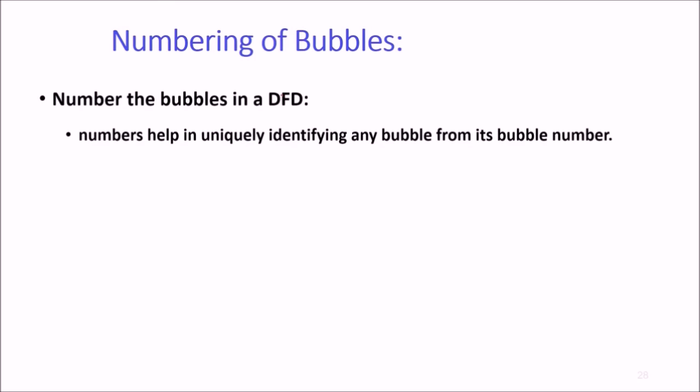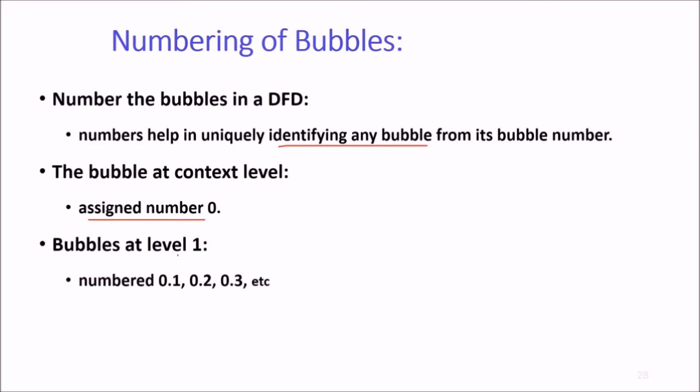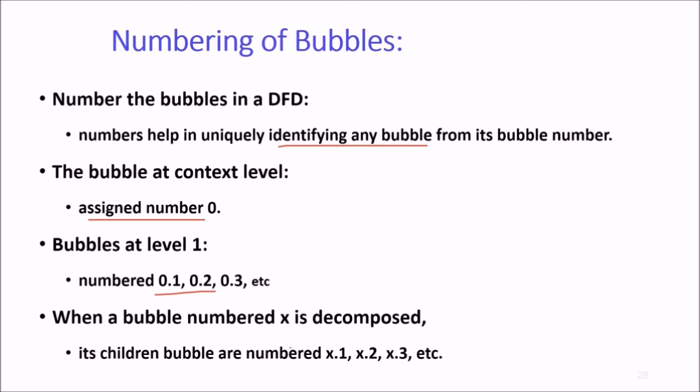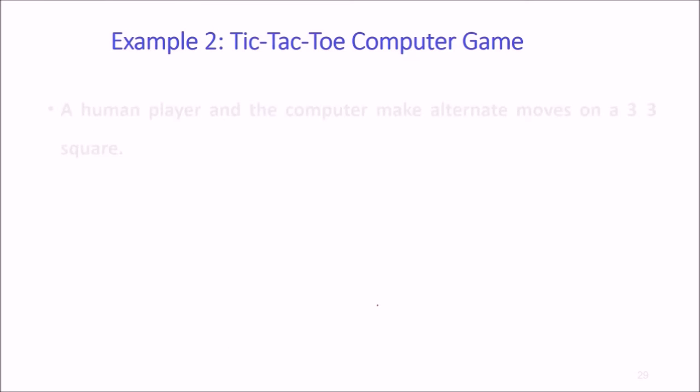How to number the bubbles? Numbers help in uniquely identifying any bubble from its bubble number. Bubble at context level is assigned number 0. Bubbles at next level are assigned 0.1, 0.2, and 0.3. When a bubble number X is decomposed, the children bubbles are numbered as X.1, X.2, X.3, etc.